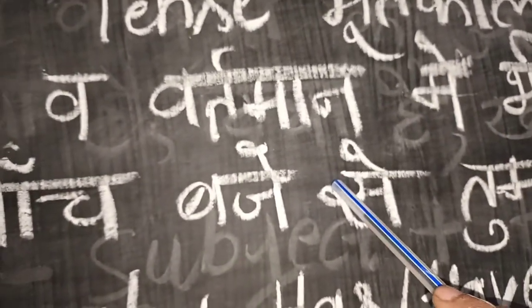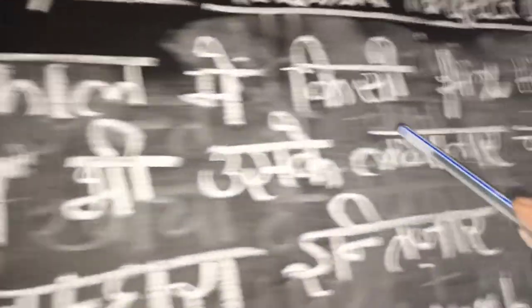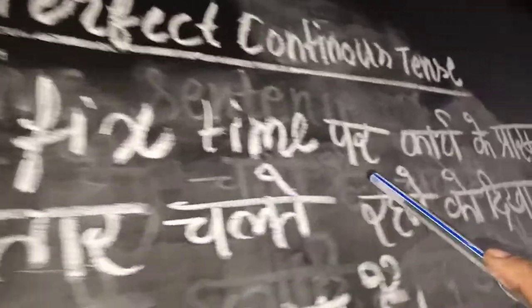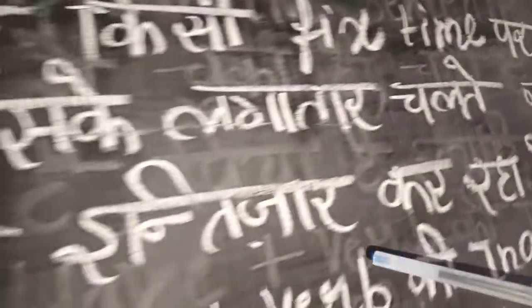Present Perfect Continuous tells you about an action which began sometime in the past and which is still continuing and may go on in future as well.